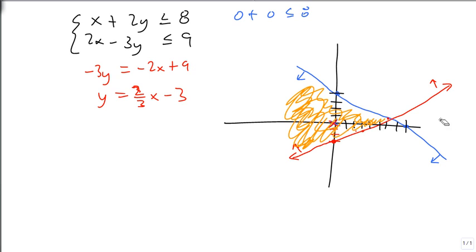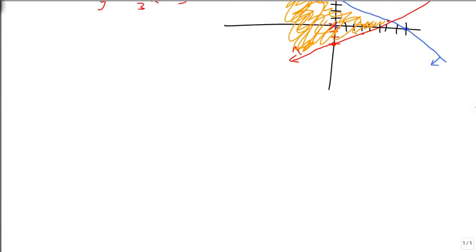Notice this means that this region, this region, and this region are unshaded. Only this region gets shaded. Let's look at another example.